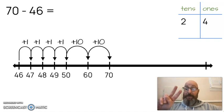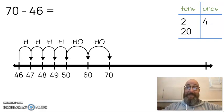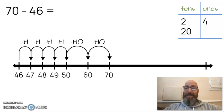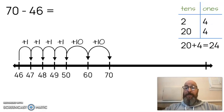2 tens is worth how much? Count again by tens. Did you get 20? I bet you did. And 4 ones is worth how much? 4. Very good. And if we add those together, we know that 20 plus 4 equals 24, which means our answer is 24.